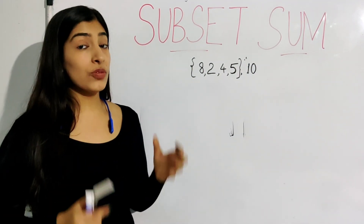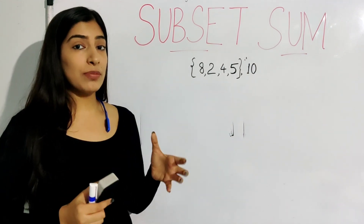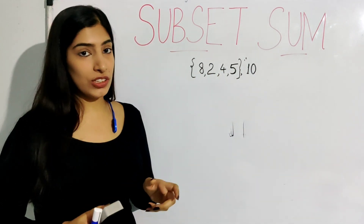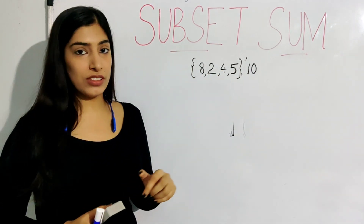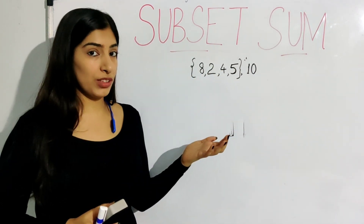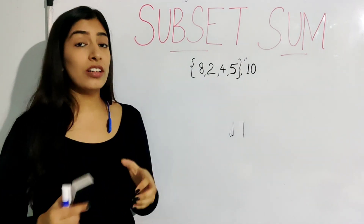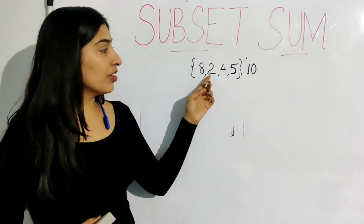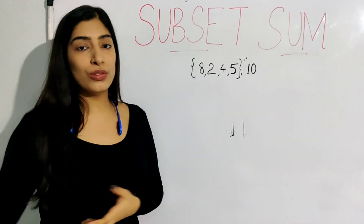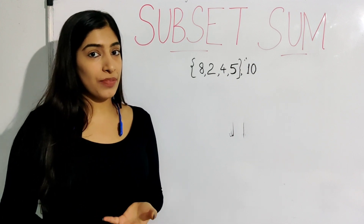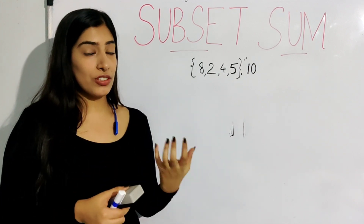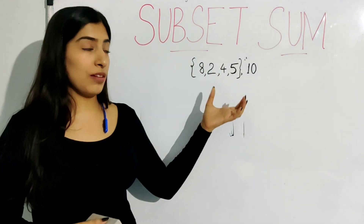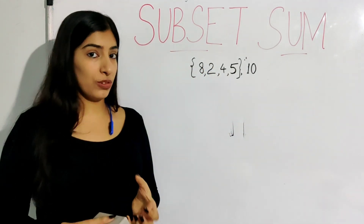One thing to note is we have to find a subset. In a subset, the elements don't have to be continuous. So 8 and 5 is a subset, only 4 is also a subset, 4 and 8 is also a subset — we have to consider all the possibilities. Also note that we cannot repeat the numbers. This is a very good point to discuss with the interviewer: since we have to find a subset, we cannot repeat numbers.